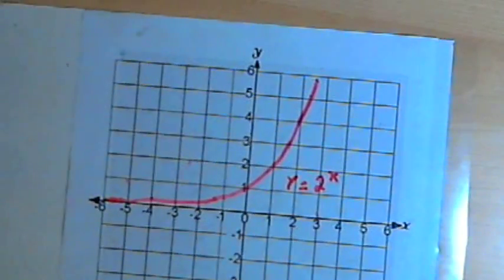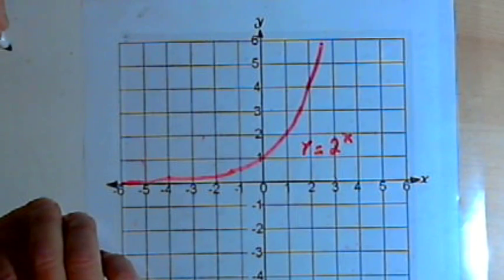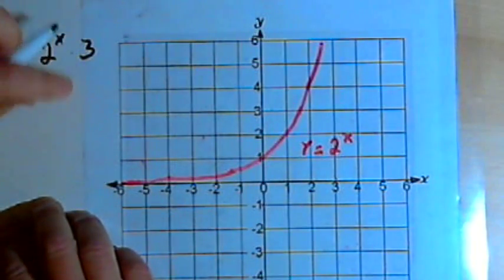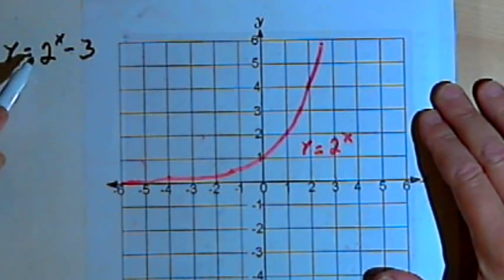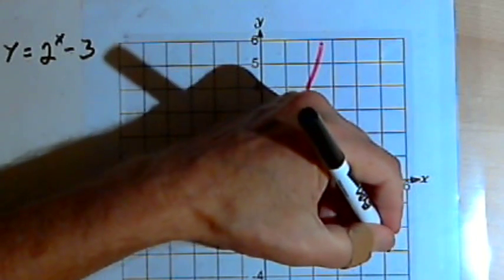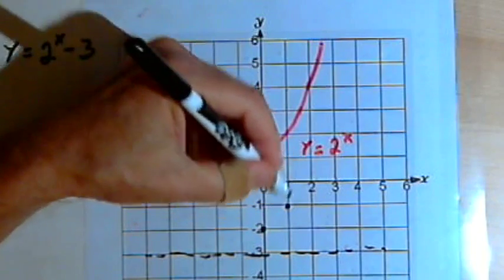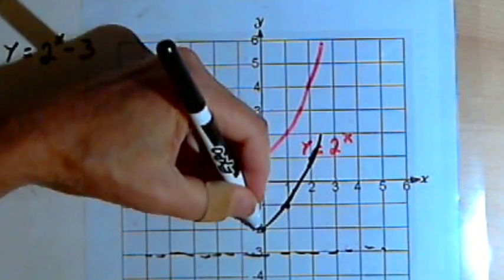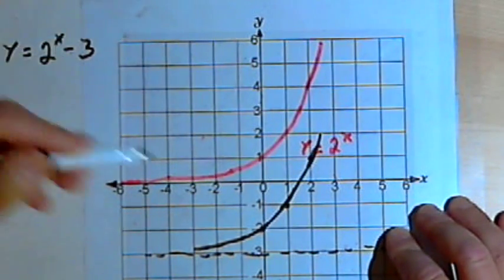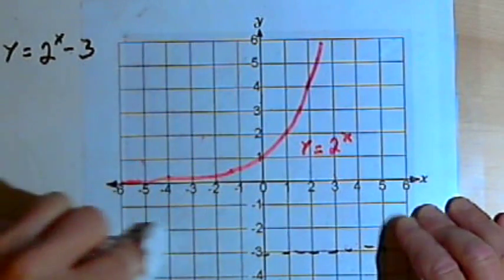Now let's look at some transformations. Let's take y equals 2 to the x and turn it into y equals 2 to the x minus 3. What I'm going to do is take the original 2 to the x and just drop it down by 3 units. So I'm going to have a horizontal asymptote at y equals negative 3, and then all the points on the graph will drop downward 3 units. If I add a negative number after the exponential expression, I drop the graph downward; if I add a positive number like plus 4, it would raise the graph up by that many units. So that's a vertical shift.